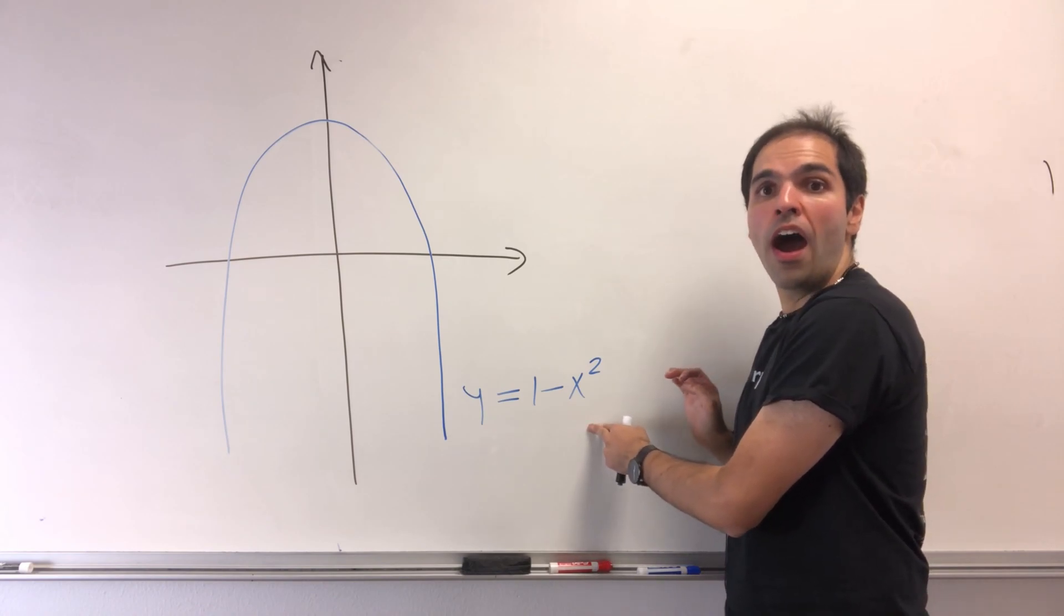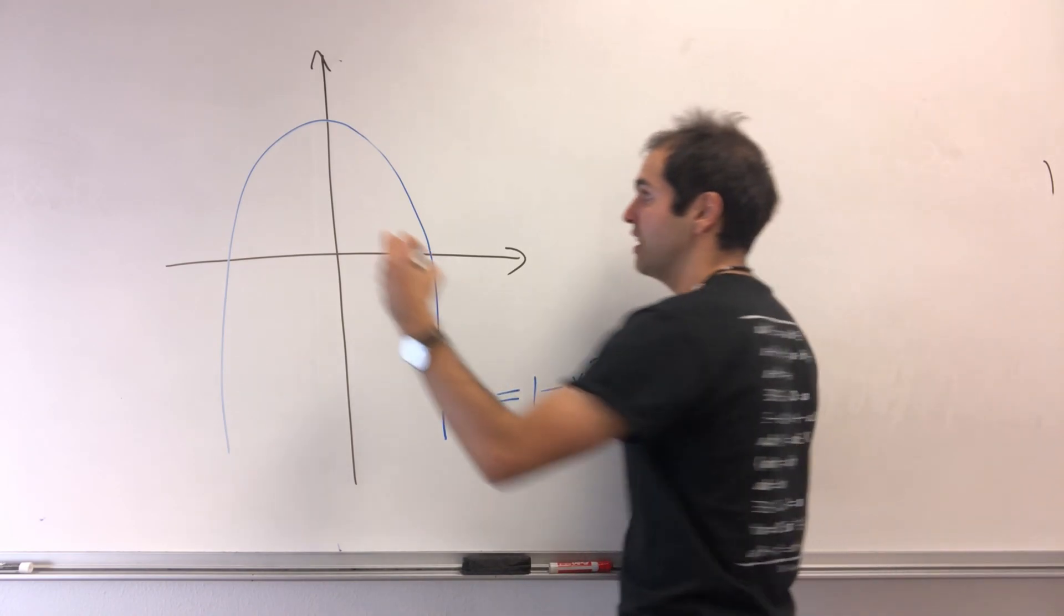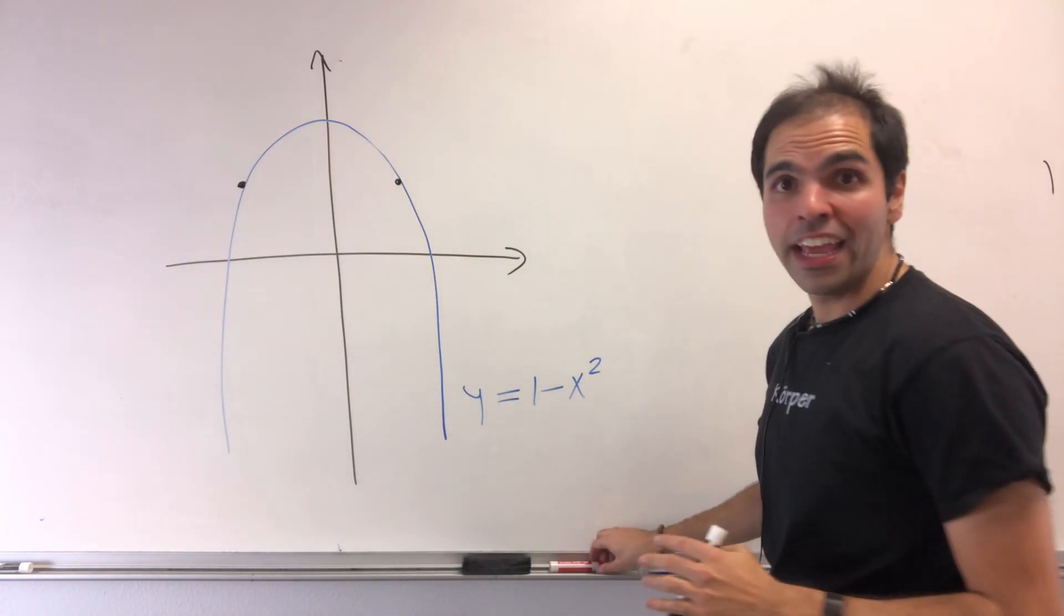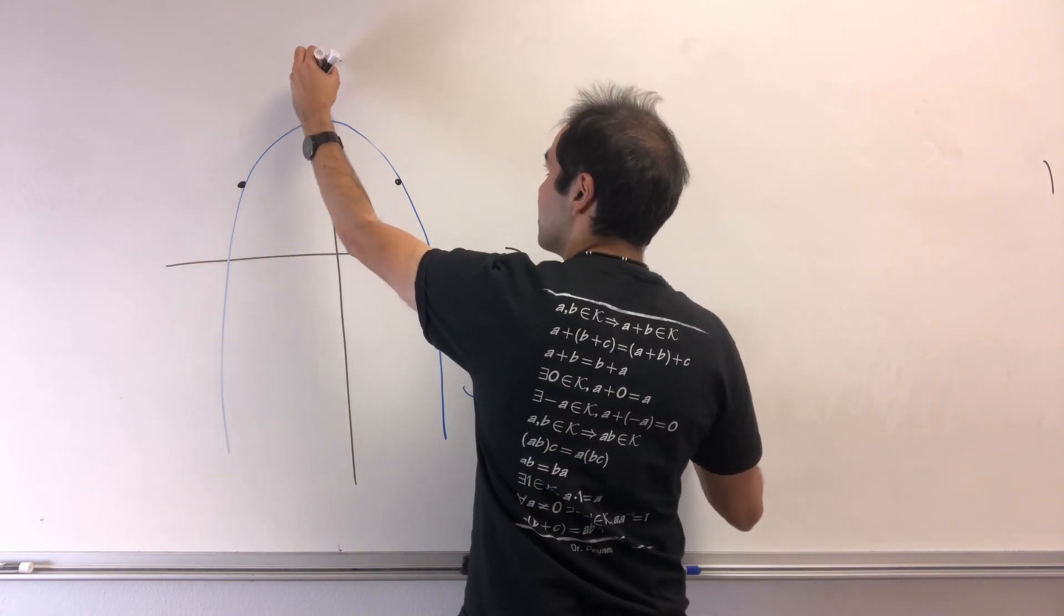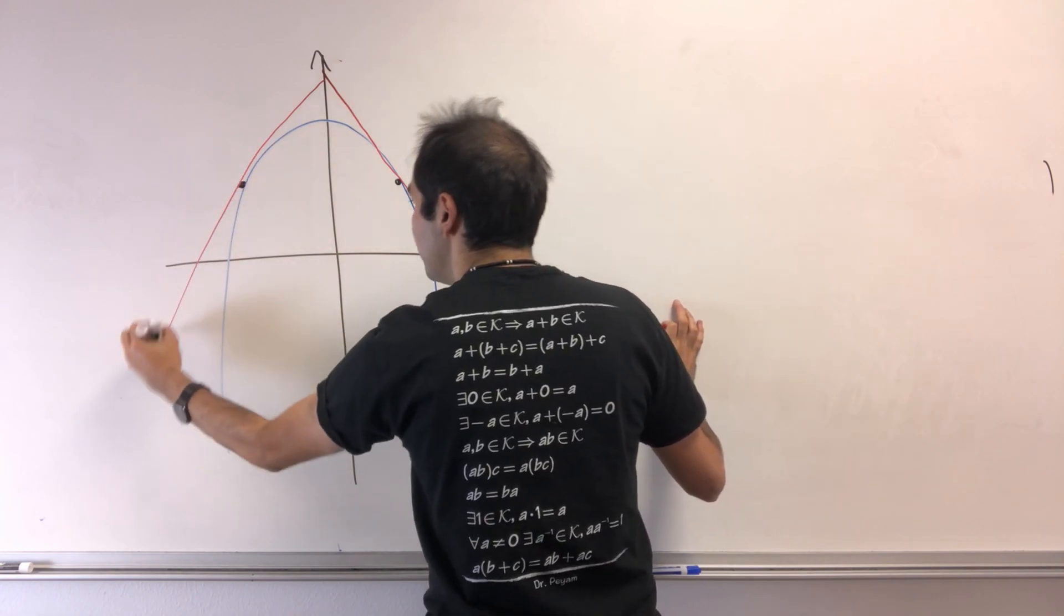Consider the parabola y equals 1 minus x squared. Let's find two points on that parabola such that the triangle formed by the x-axis and both of those tangent lines is equilateral.